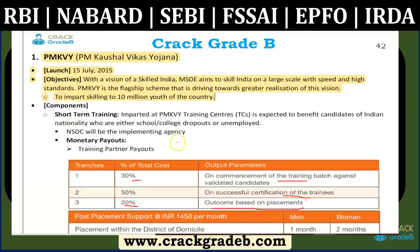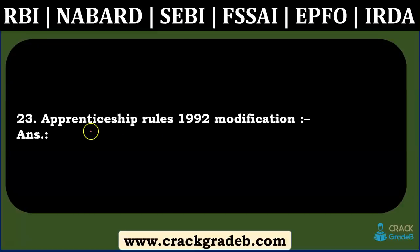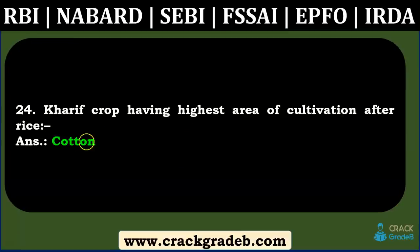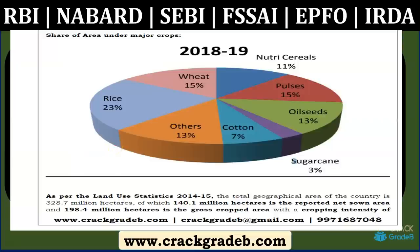Those who studied this content likely attempted these questions correctly. Apprenticeship Rules 19 and 22 modification — this was not covered in our content. The group having the highest tier of cultivation after rice — the exact question is unclear, but we have covered this in the General Agriculture chapter, where we have highlighted the area under major crops.